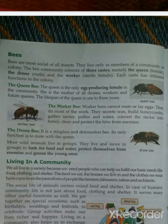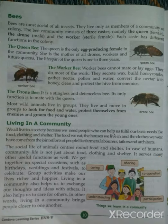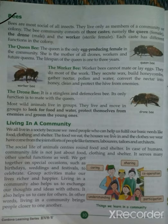The next social insect is the bee. Bees are the most social of all insects — they live only as members of a community or colony. The bee community consists of three castes: the queen, which is female; the drone, which is male; and the worker, which is a sterile female. Each caste has a different function in the colony.